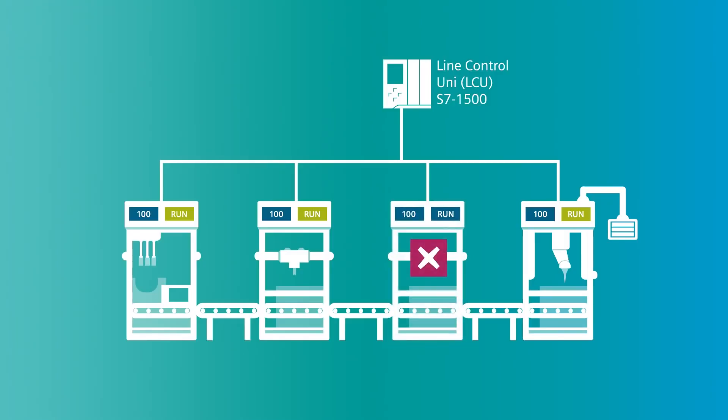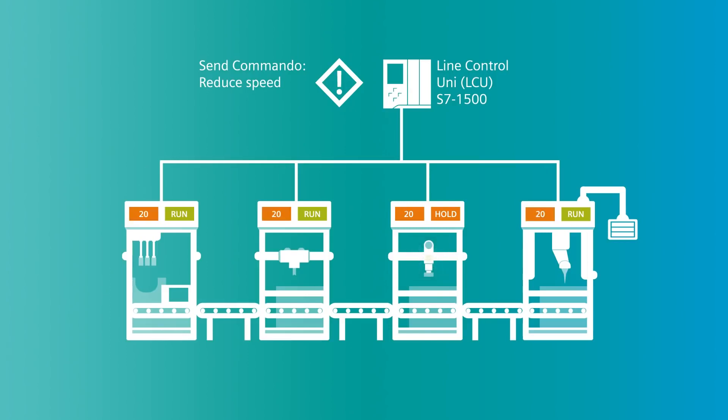No further work needs to be carried out on the individual machine. The final step involves centrally controlling and synchronizing all machines on the line. For this, we'll use the practical concept of a Line Control Unit, or LCU for short. A separate SIMATIC S7-1500 becomes a full-featured line controller with this application. The LCU knows the OMAC status model and can operate all machines which work according to this status model. Four different strategies for controlling the line are available to the LCU, depending on the application.